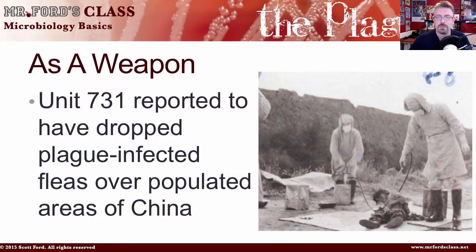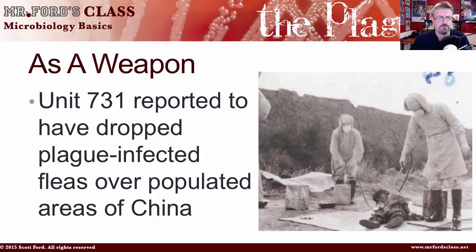Now, regarding the plague as a biological weapon — all of this is open-source information. There was a group called Unit 731, a covert biological and chemical warfare research and development unit within Japan, active during World War II, and reportedly responsible for most war crime charges against Japan from that war. Unit 731 reportedly dropped plague-infected fleas over populated areas of China. Subsequently, both the United States and Soviet Union developed aerosolized versions of the plague.